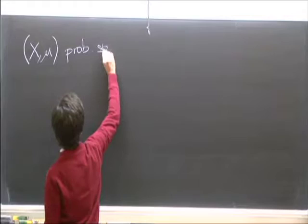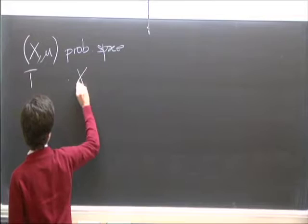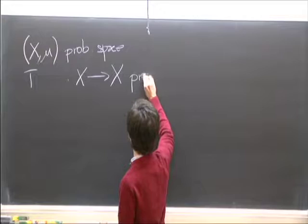μ will always be affixed but arbitrarily, probably in space. And I will always take T from X to X, the measure-preserving transformation—that is, it preserves ν.